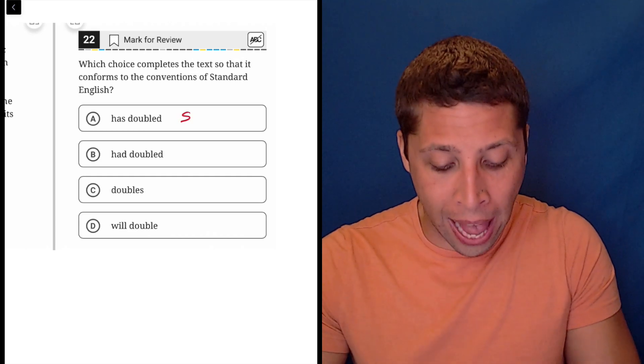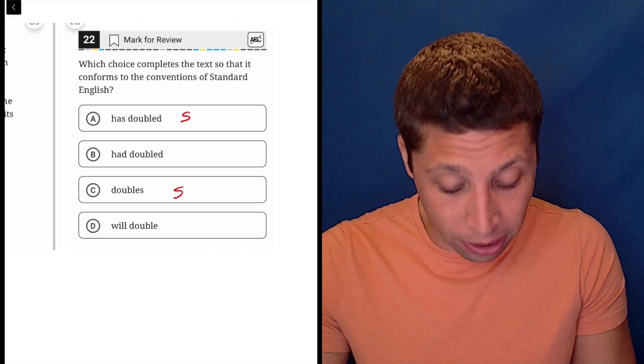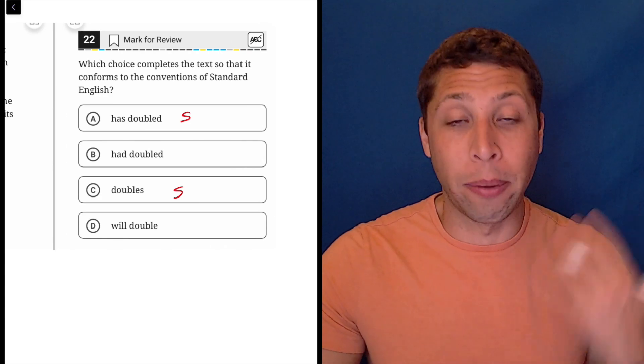So choice A is singular. Has is a singular verb. Choice C is also singular in most cases. It doubles every hour, we could say something like that.